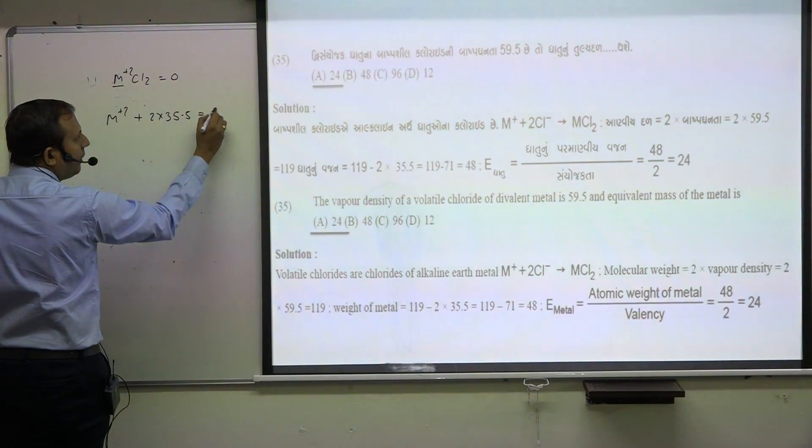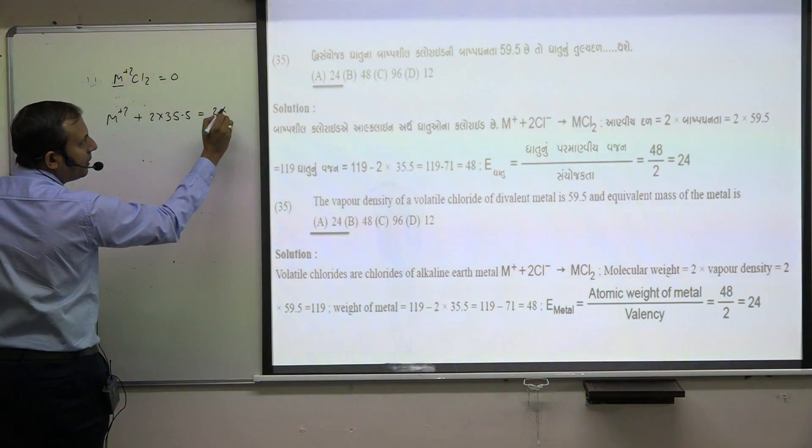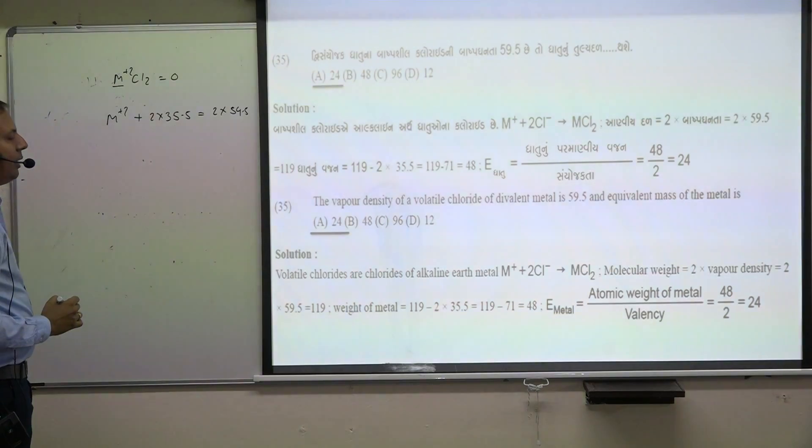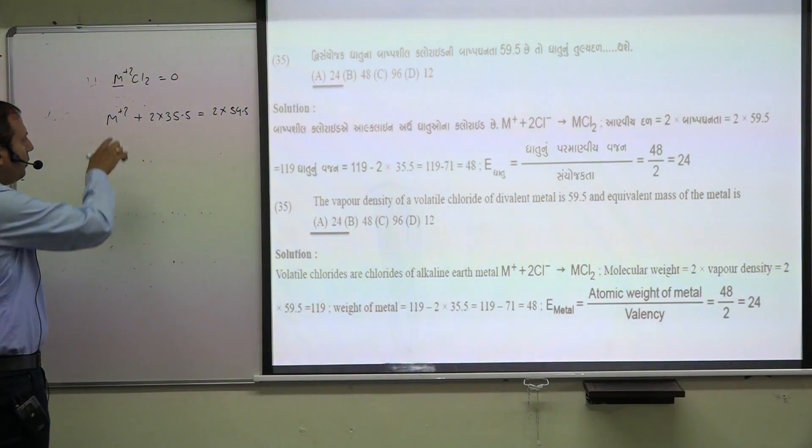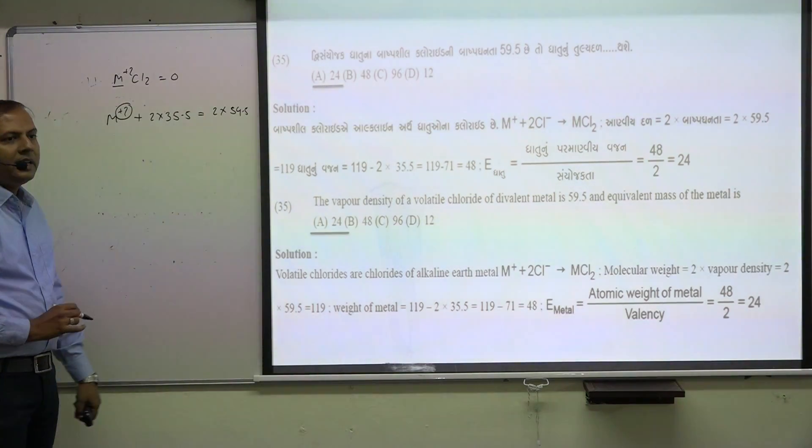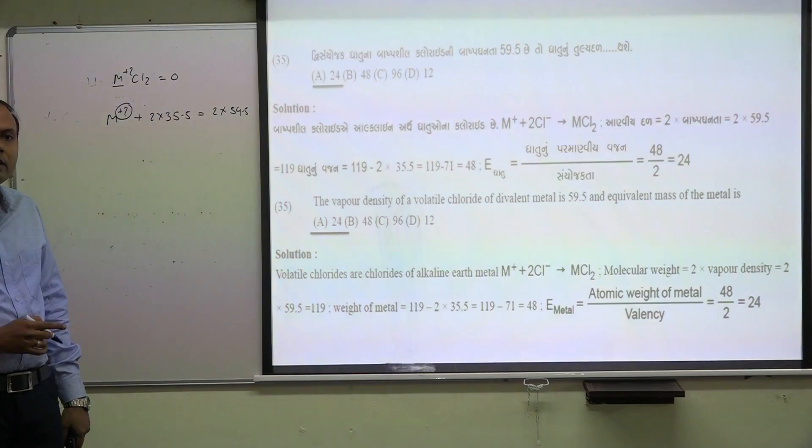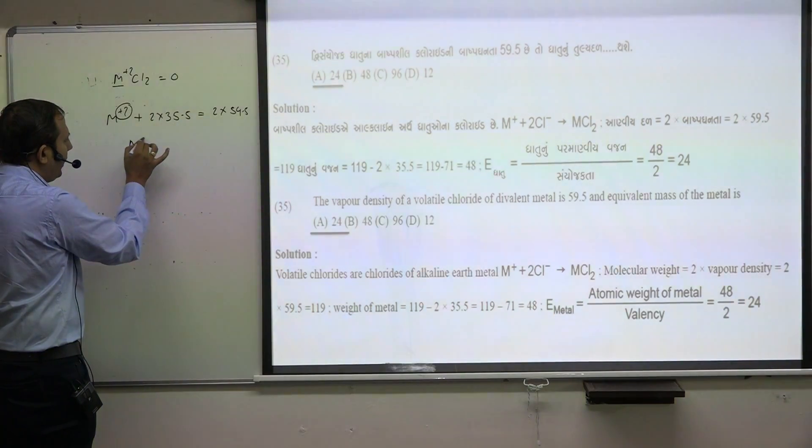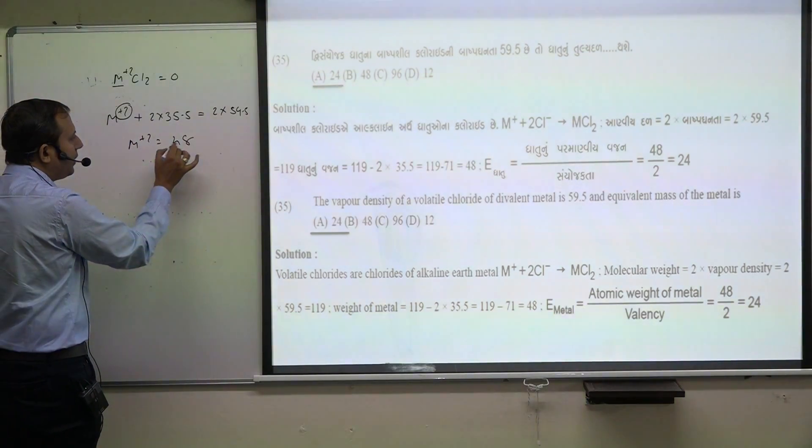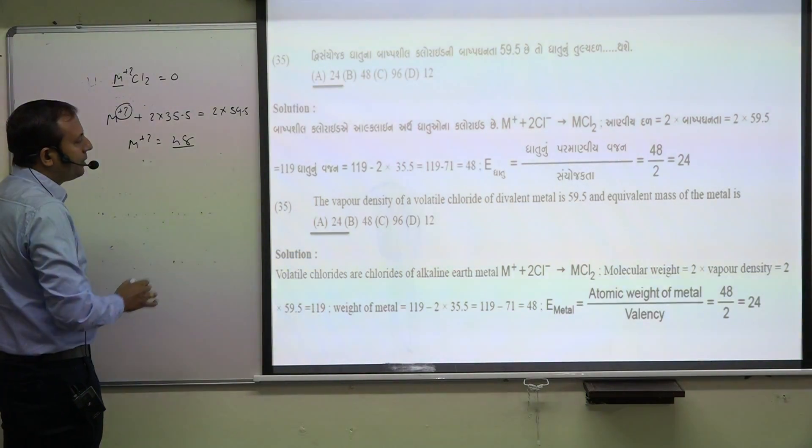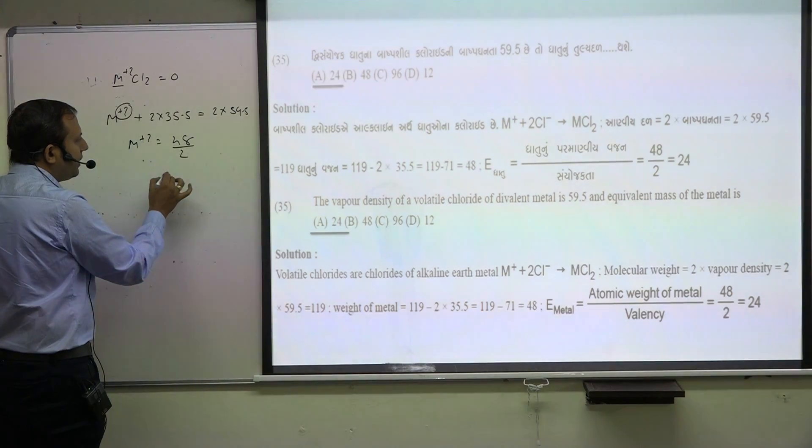Equal to two times vapor density, which is given as 59.5. Solving this equation: 52 times 59.5 equals M plus 2 plus two times 35.5. The solution gives 48 divided by 24, so M plus 2 equals 48 for the molecular mass.